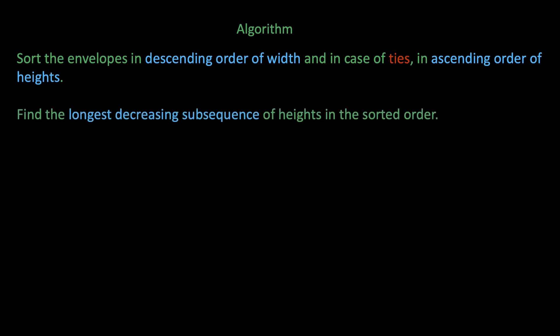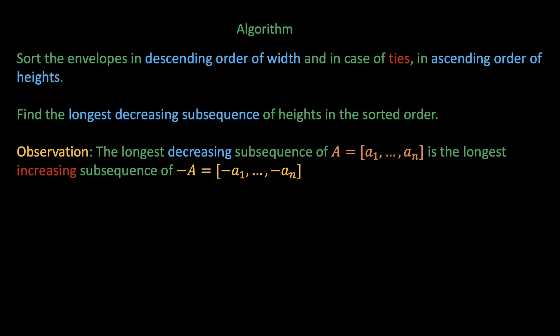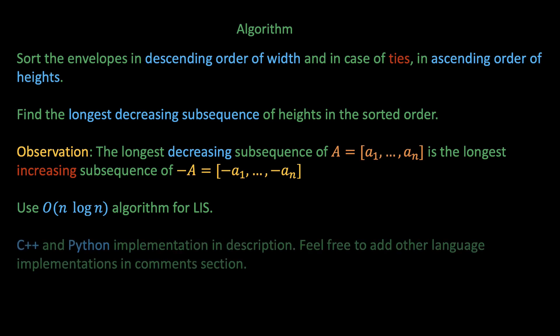Here's the algorithm. We first sort the envelopes in descending order of their width, and in case of ties between width in ascending order of height. Next, we find the longest decreasing subsequence in terms of their heights. How do we do this? Well, a neat trick is that the longest decreasing subsequence of A is the longest increasing subsequence of negative A, where negative A is all the elements of A simply negated. I'll leave this as a fun small exercise for you to try to prove. This means that we can just run the O(n log n) time algorithm for the longest increasing subsequence on the negated heights to find the answer. I'll leave a C++ and Python implementation in the description for you to reference.